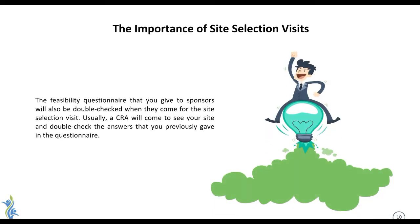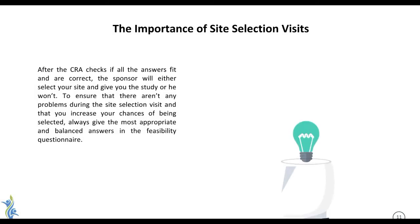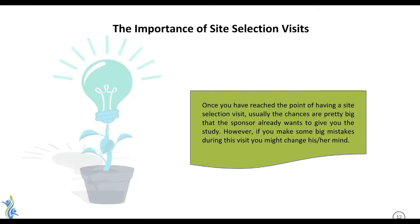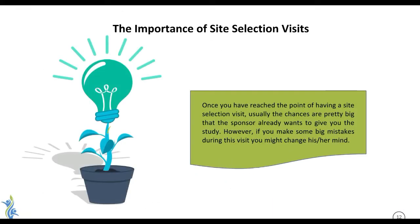Now on to the site selection visits. This is after the feasibility analysis, when the sponsor or CRO determines if your site is a good fit. This is where a CRO will come visit your site to check out everything — how it seems, how it looks, if you're following GCP, and other nuances of clinical trial etiquette and procedures. They'll also correlate the answers you gave on the feasibility analysis to see if they line up during the site selection visit. Once you've reached the site selection visit point, you're pretty much there on winning the study — as long as everything checks out and matches your feasibility analysis, they'll be very eager to work with you.